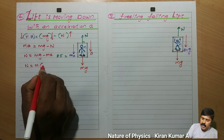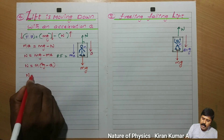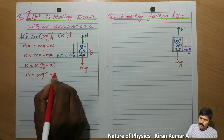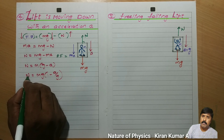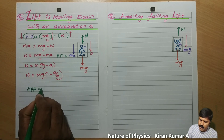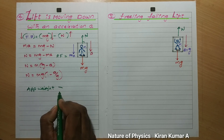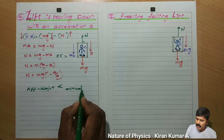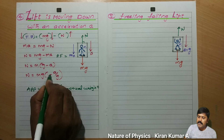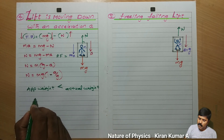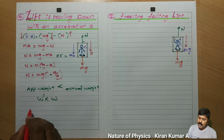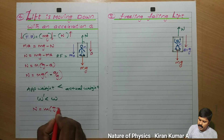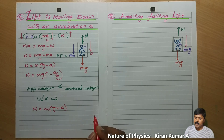So N is equal to M(g − a), and also N is equal to Mg(1 − a/g). From this equation, N represents the apparent weight, and apparent weight is less than the actual weight — because of the Mg minus term. The frequently used formula is N is equal to M(g − a). So in the downward direction, our weight is slightly decreasing, which we can see on the weighing machine.